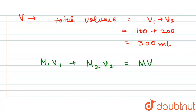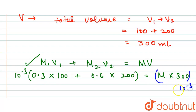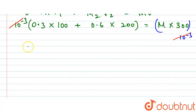When the two solutions are mixed, we use this expression to find the resulting solution. Substituting: (0.3 × 100) + (0.6 × 200) = M × 300. The volumes are in milliliters and we convert to liters using 10⁻³, but these factors cancel out on both sides.